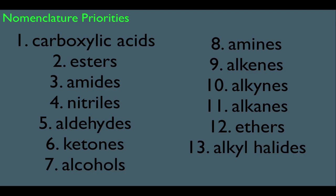Naming aldehydes and ketones — there's definitely a lot going on here, which is why the nomenclature priority chart is so important. You don't have to make sense of why, for instance, carboxylic acids are number 1 and alkyl halides are number 13. It actually has to do with reactivity — typically, the more reactive a functional group is, the higher priority it has. We just need this chart to figure out which functional group has priority in the naming of a molecule.